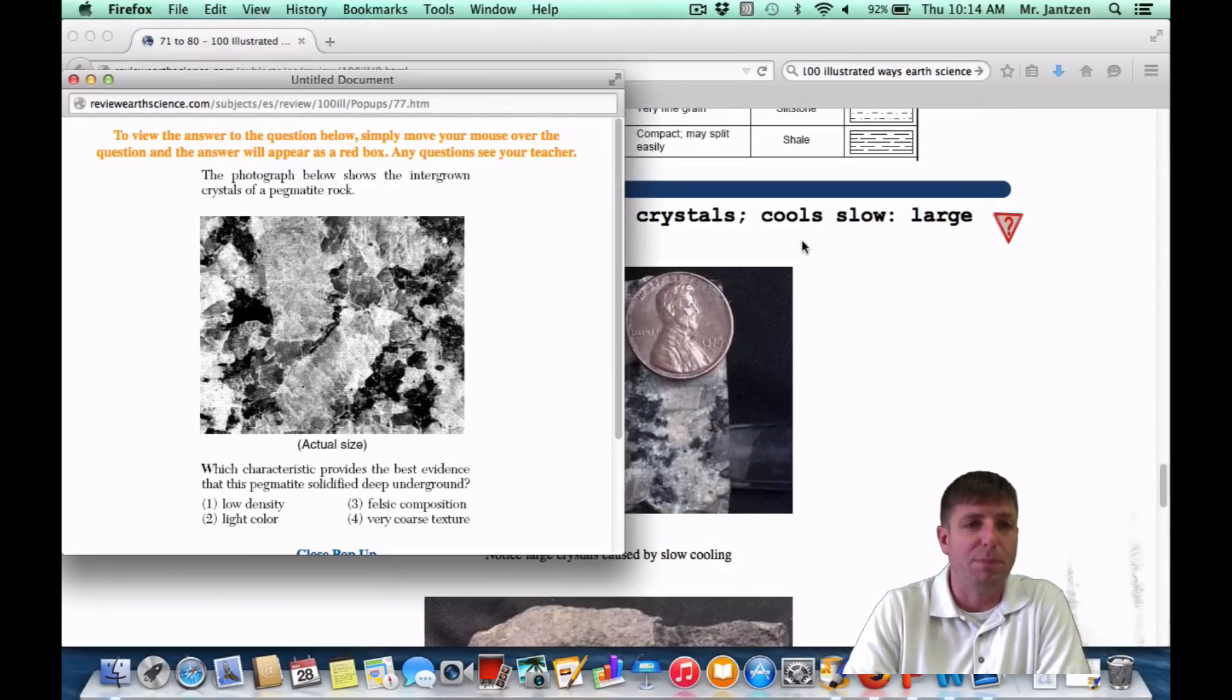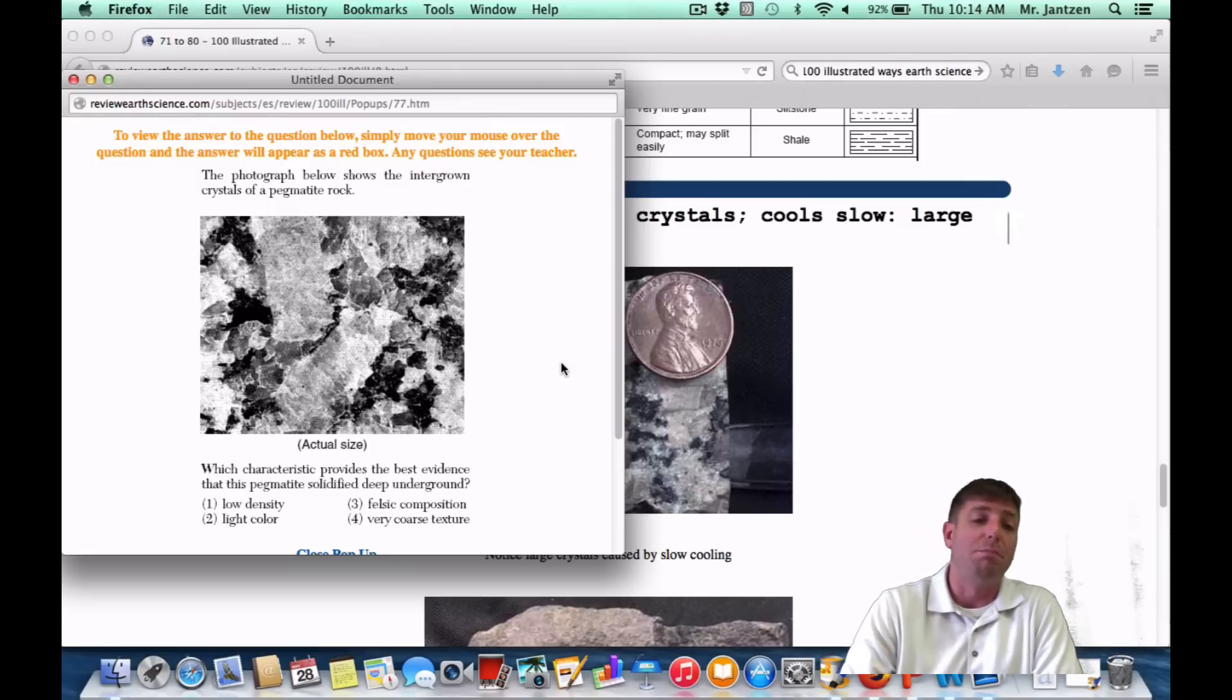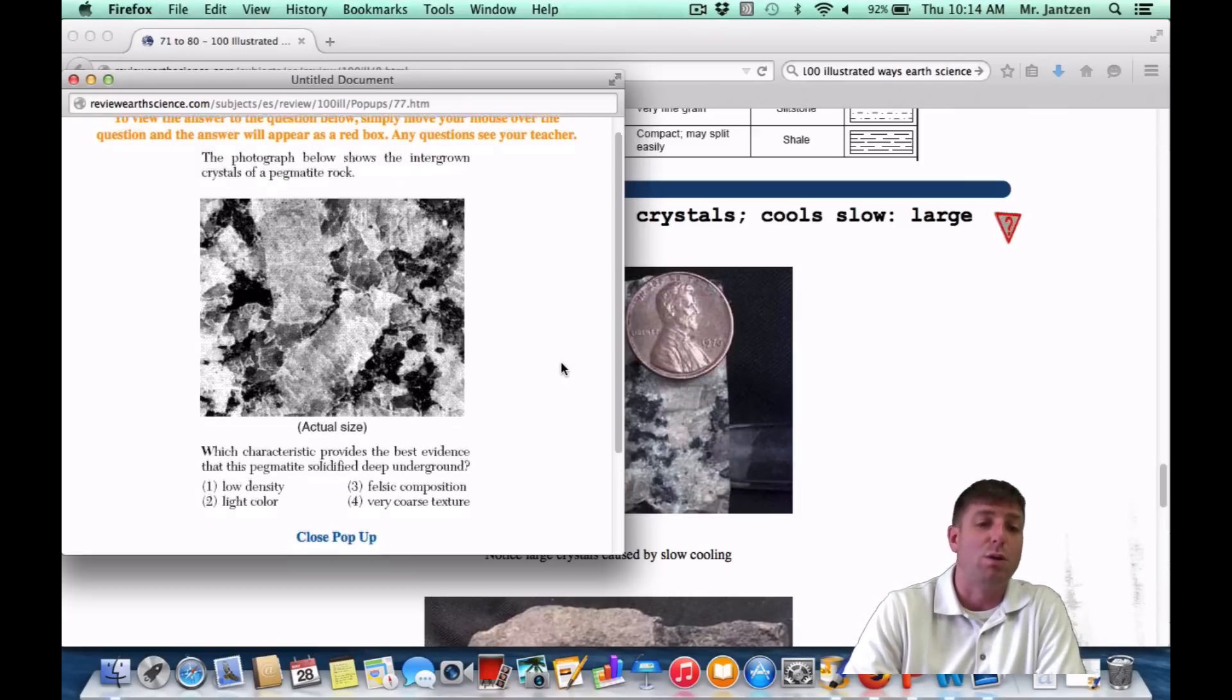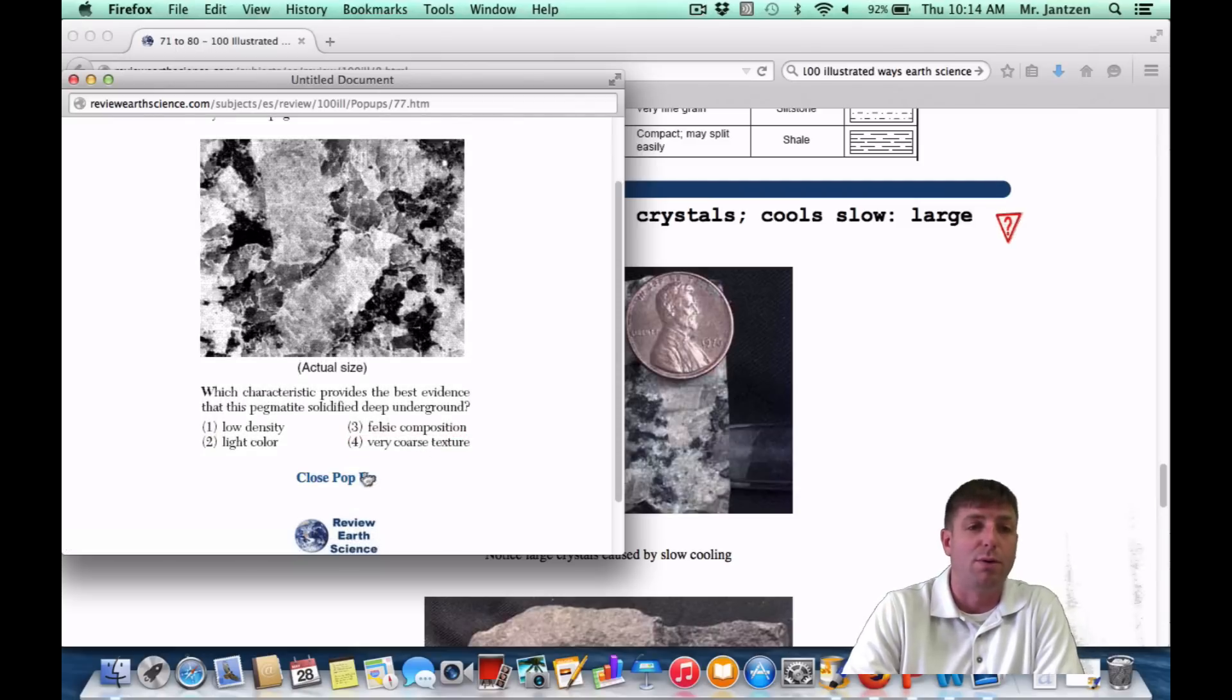As a Regents question, they're showing you a picture of pegmatite here. Which characteristic provides the best evidence that the pegmatite solidified deep underground? Another word for big crystals is coarse texture, or number four, very coarse texture.